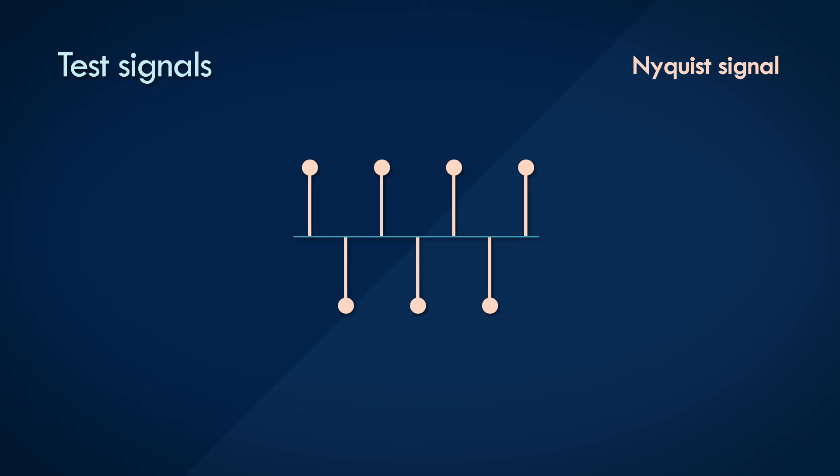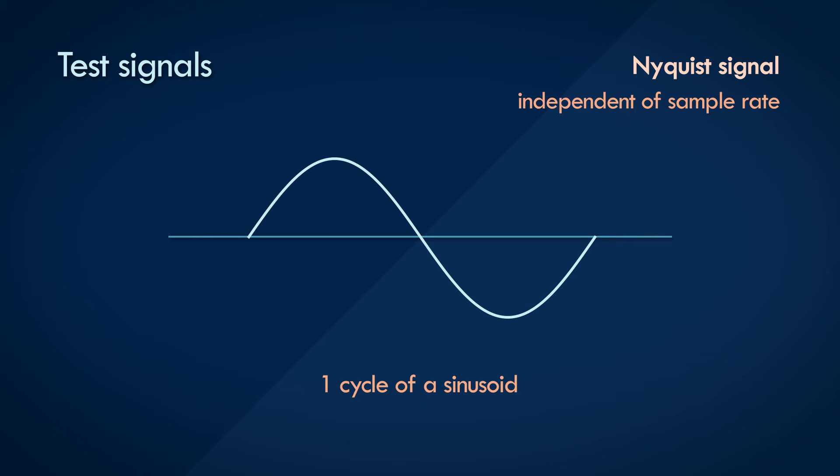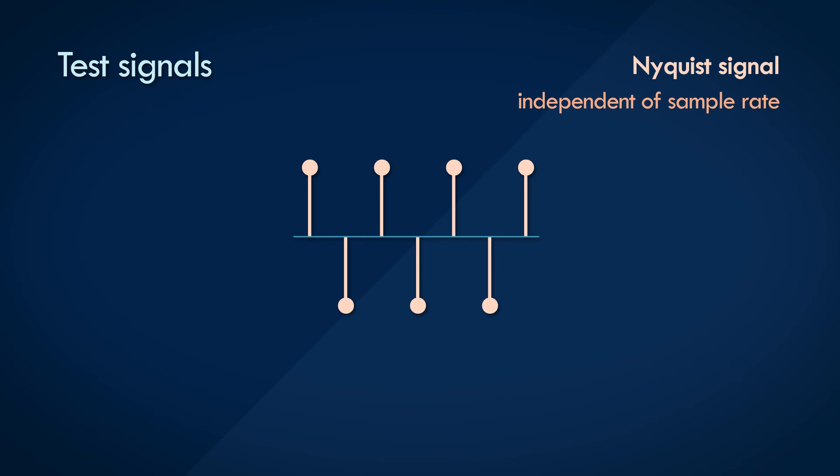For our test signal, the Nyquist input sequence represents the Nyquist frequency of the system and is independent of the actual sampling rate. We don't care what the sample rate of the system is, but we know that at the Nyquist frequency, each cycle of a sinusoid can be represented by at most two data points. So the input sequence of this test signal will be something like this, with each sample representing the maximum and minimum values of a cycle of a sinusoid.